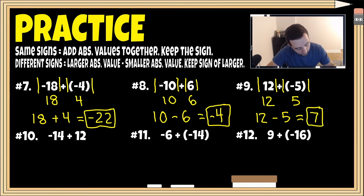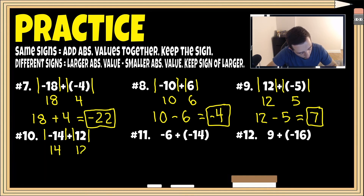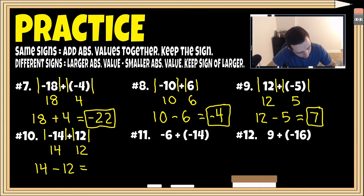For number 10, we again have different signs. The absolute value of negative 14 is 14, and the absolute value of 12 is 12. We subtract: 14 minus 12 is two. The larger number — 14 — was originally negative, so our final answer is negative two.